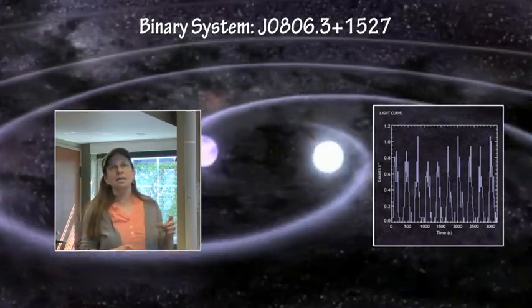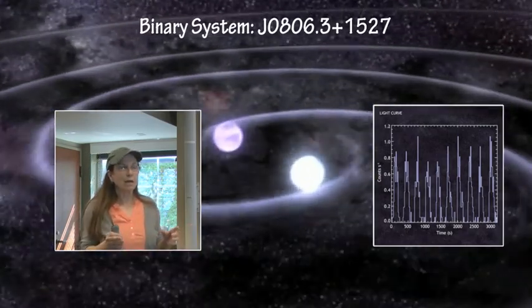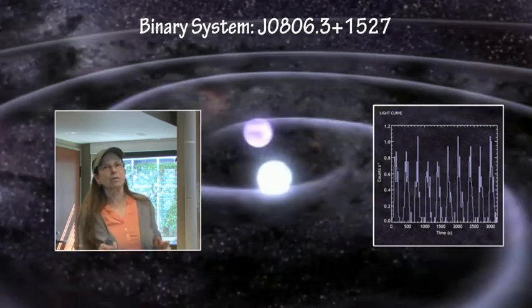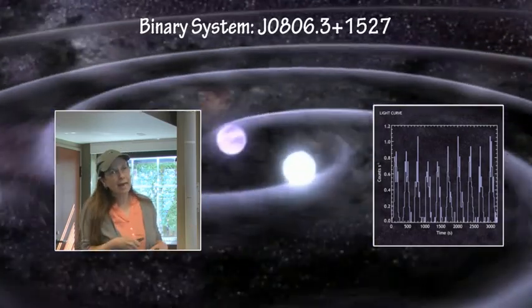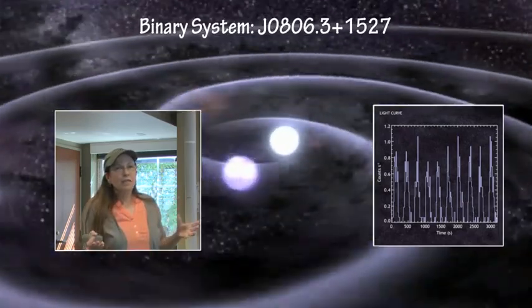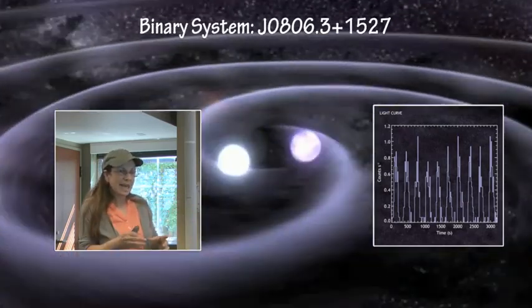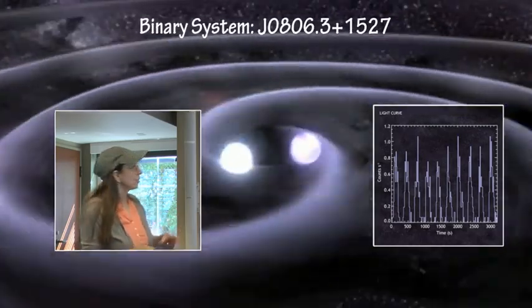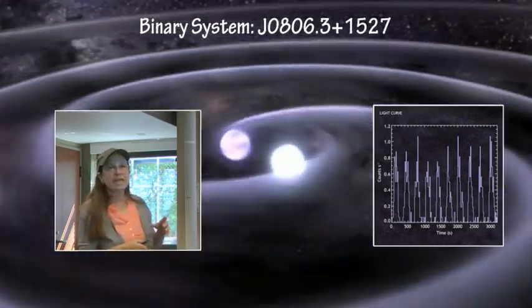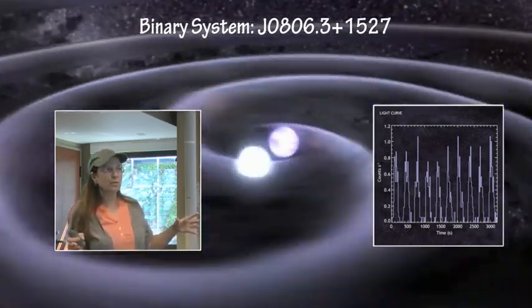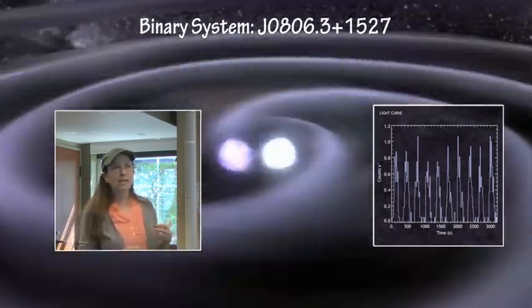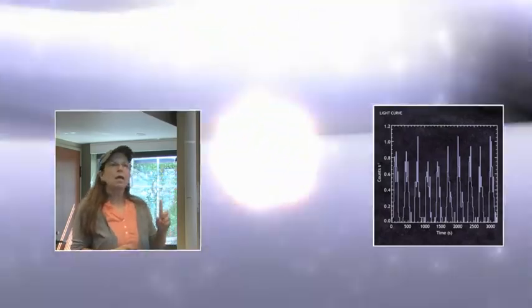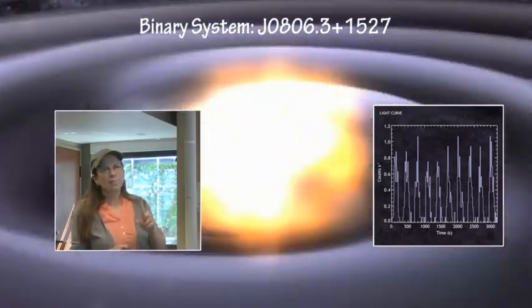From the light curve produced from the X-ray data, it has been determined that the orbital speed is slowing down by 1.2 milliseconds a year. They are losing gravitational potential as the orbit decays. That gravitational potential is being translated into gravitational waves moving out through space-time. Eventually, these two will come together and coalesce and form a bigger white dwarf.